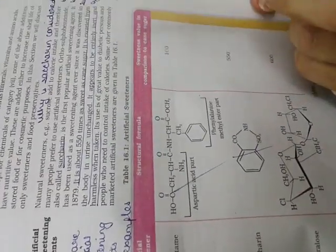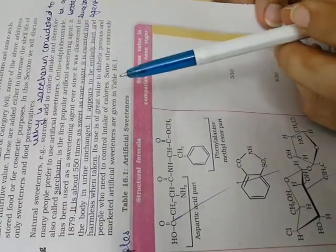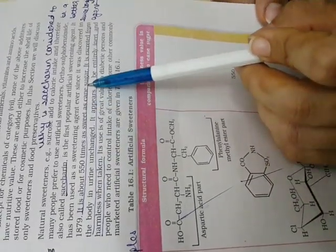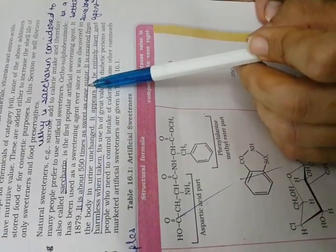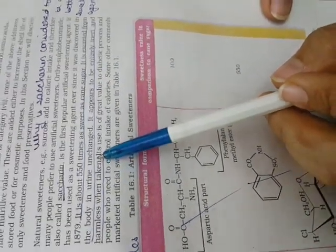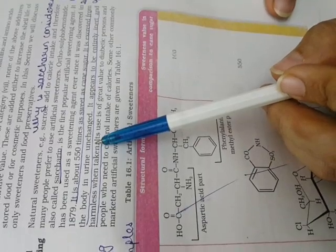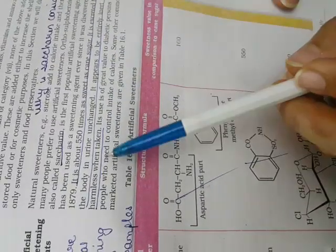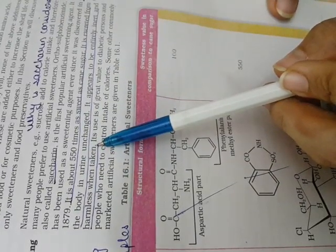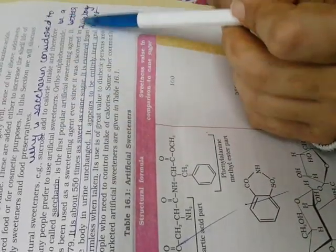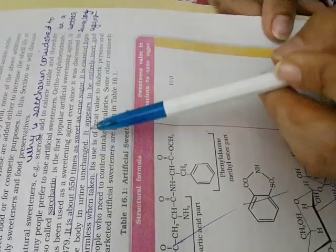And why do we use artificial sweetener instead of natural sweetener? Because they are 550 times more sweet than cane sugar. They can be excreted out from the body through urine unchanged. They are entirely inert and harmless.